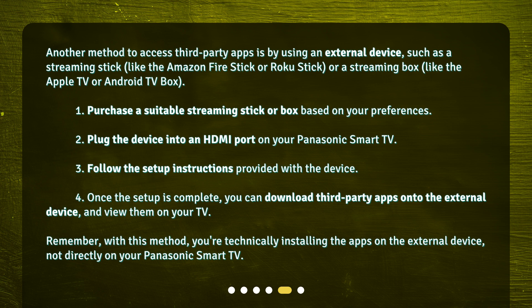How to use external devices for third-party apps: One, purchase a suitable streaming stick or box based on your preferences. Two, plug the device into an HDMI port on your Panasonic Smart TV. Three, follow the setup instructions provided with the device. Four, once the setup is complete, you can download third-party apps onto the external device and view them on your TV.